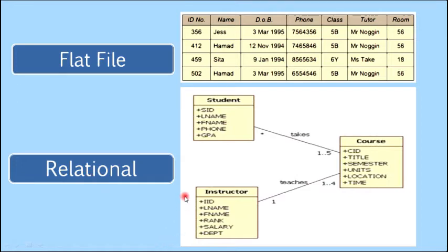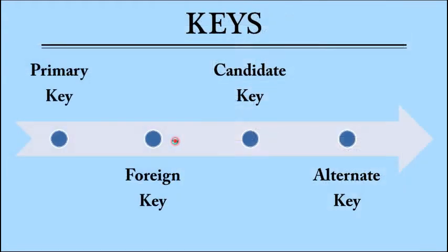Now let's move towards keys. There are four types of keys: primary key, foreign key, candidate key, and alternate key. Why do we need keys in our table? Each table has a set of attributes or values, and all these values are different from each other. If each table has a number of rows that represent a single record, how will databases keep all these records straight? That is why we use keys.